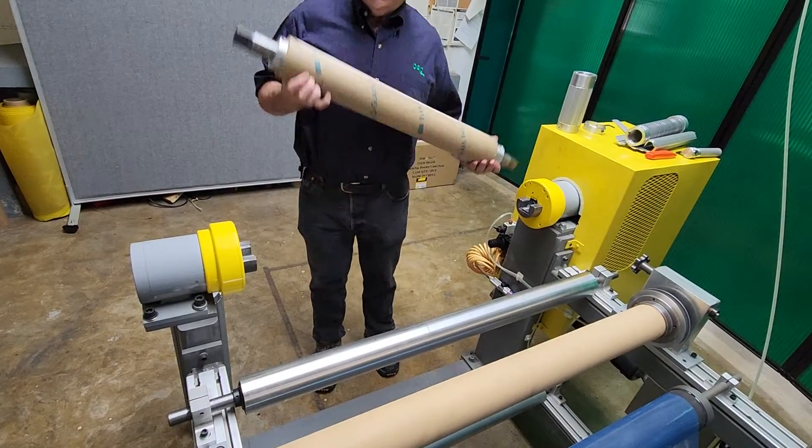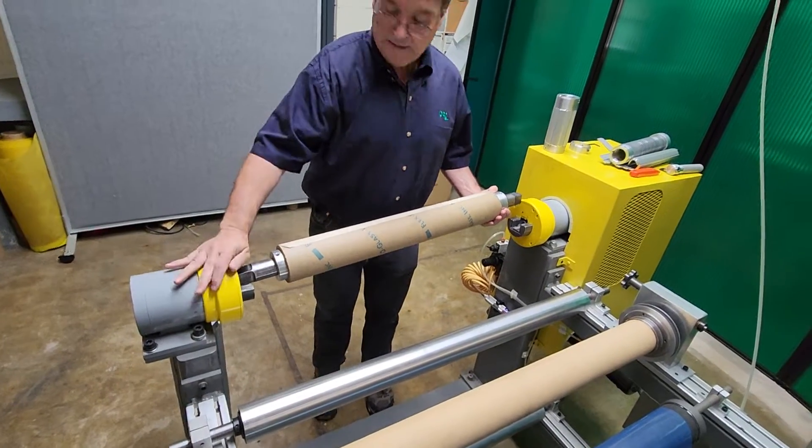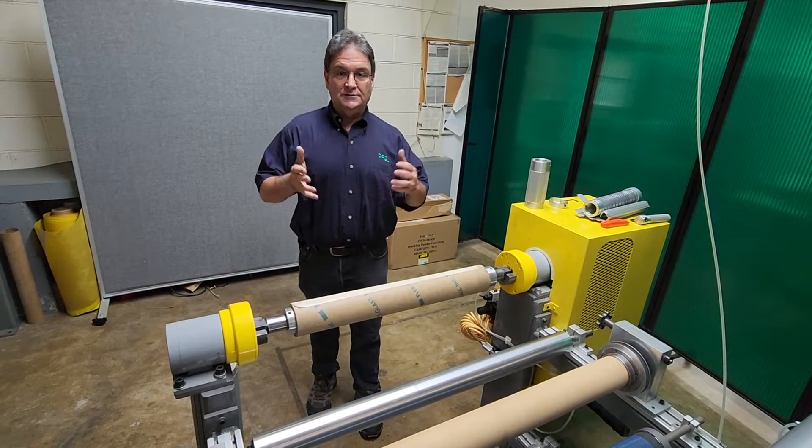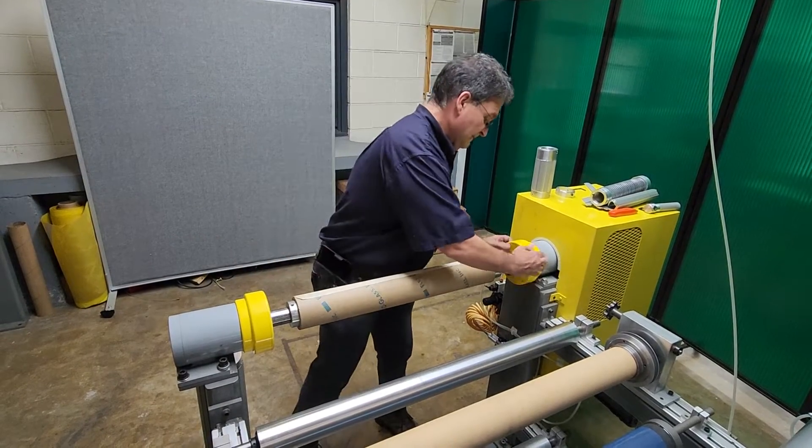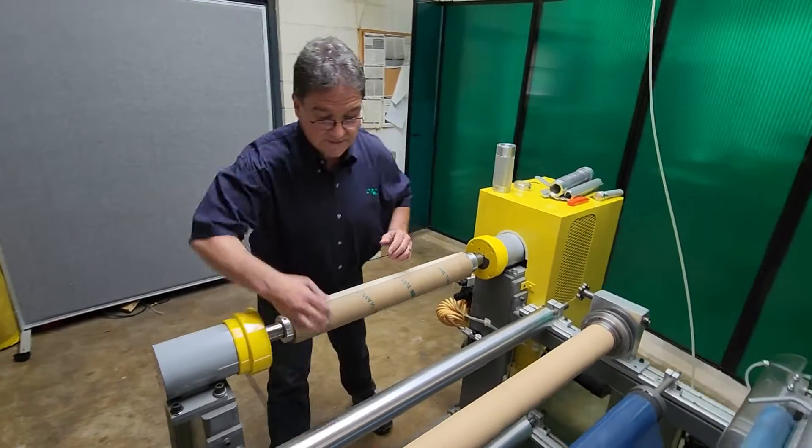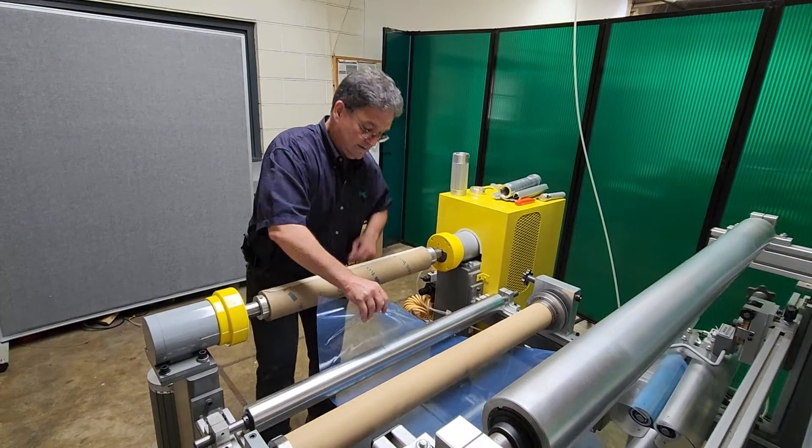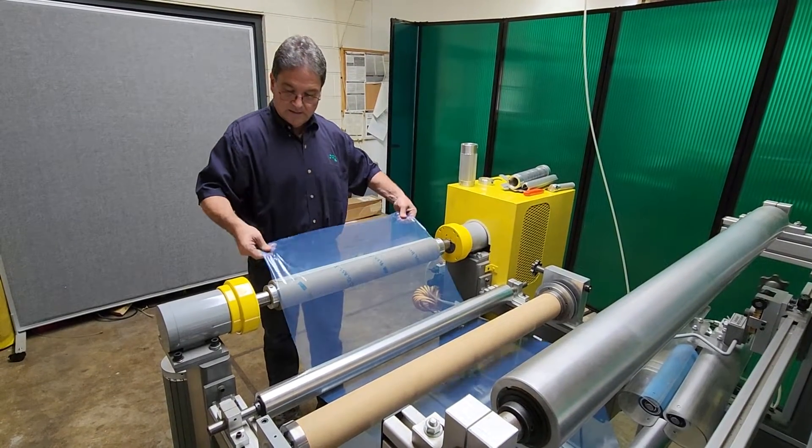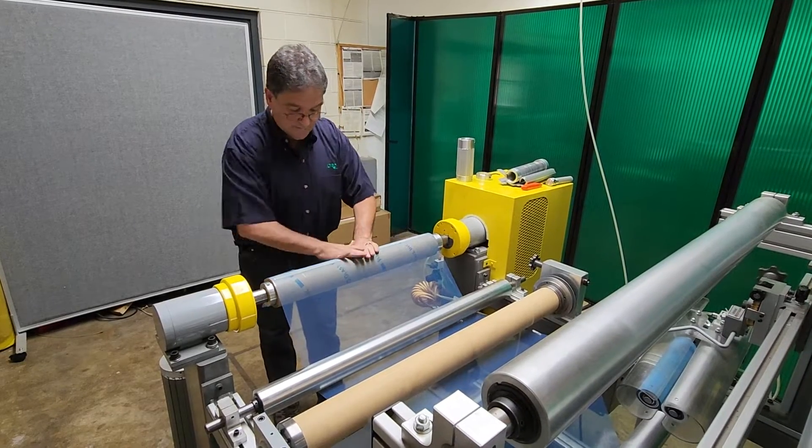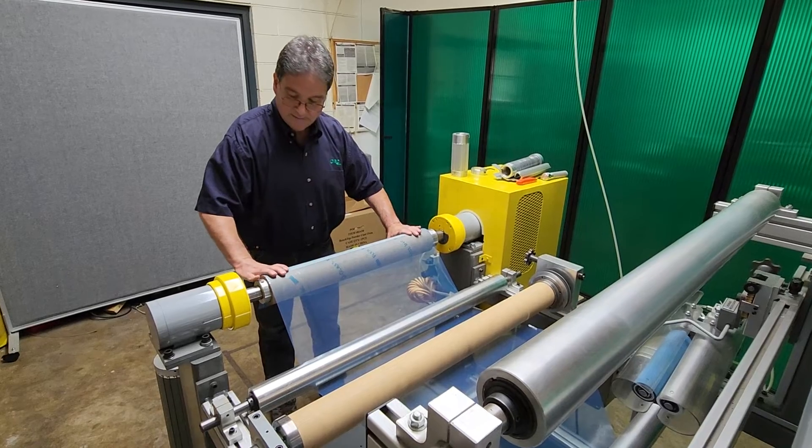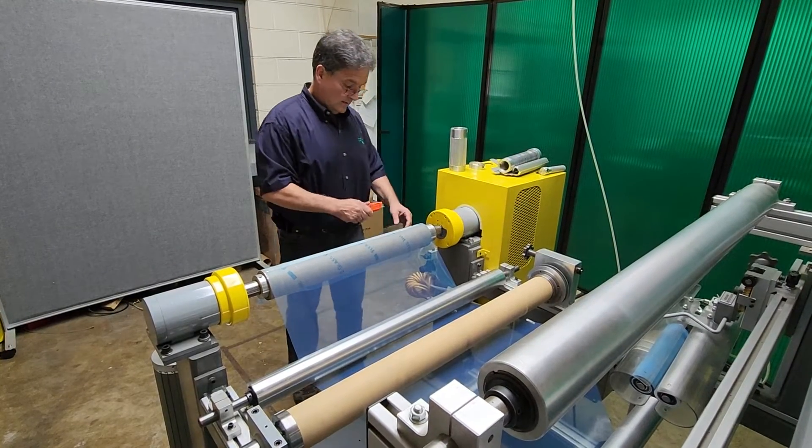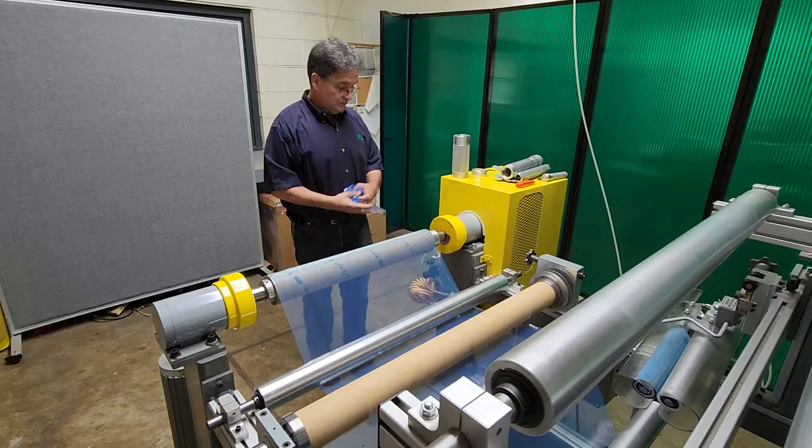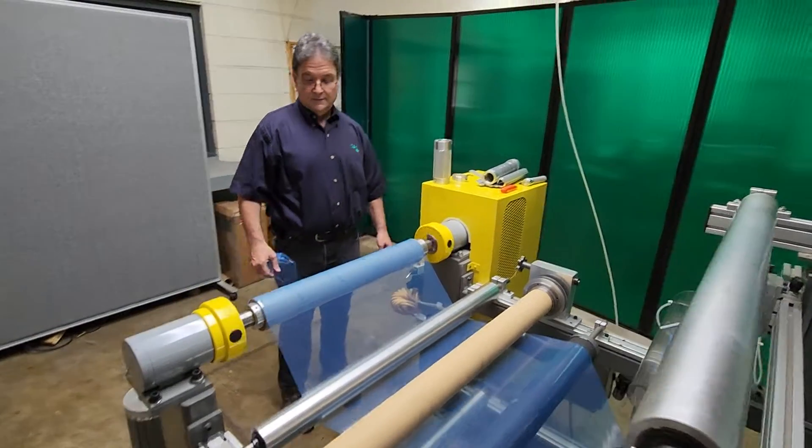We take the air shaft and drop it into our rewind. These are our safety chucks and I have a separate video for safety chucks. I'll do a couple wraps for you just so you can see how it operates. We have some sticky tape on there to hold the web in place and when I start this up you'll see it make a couple of wraps. That's how an air shaft works.